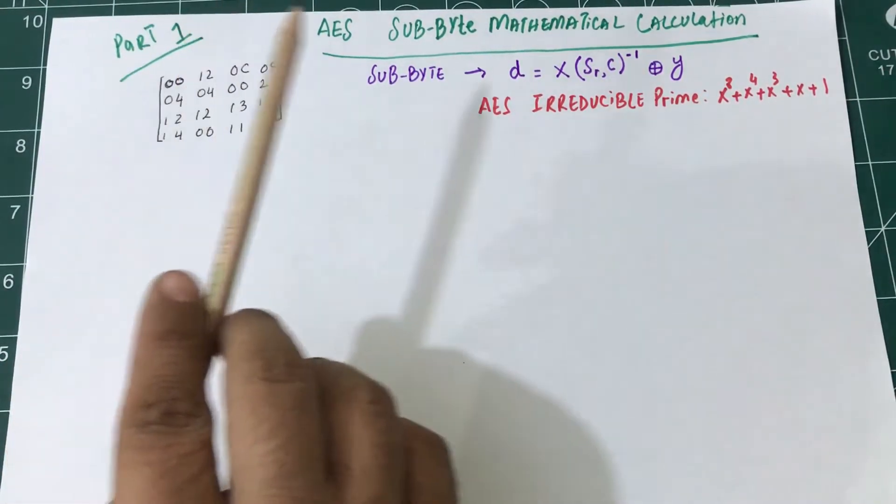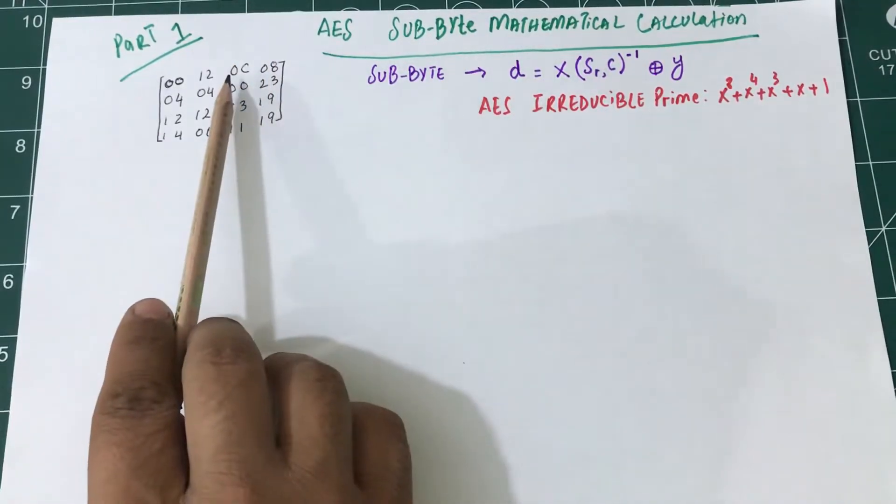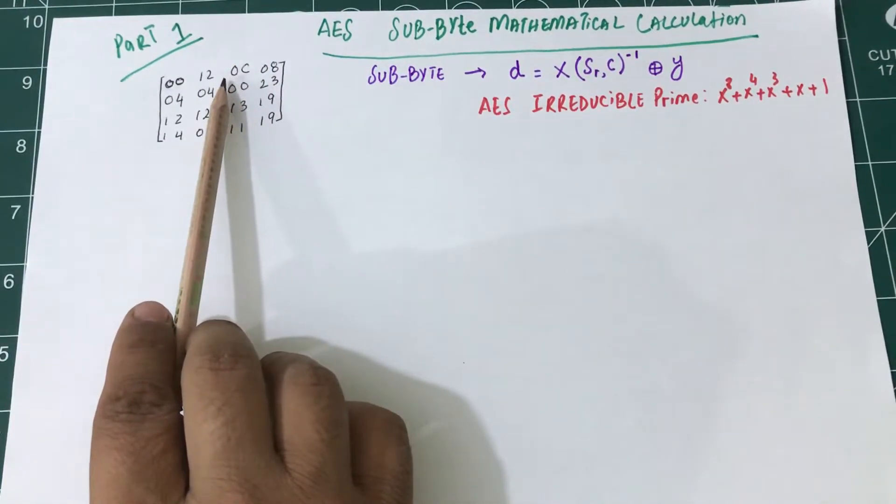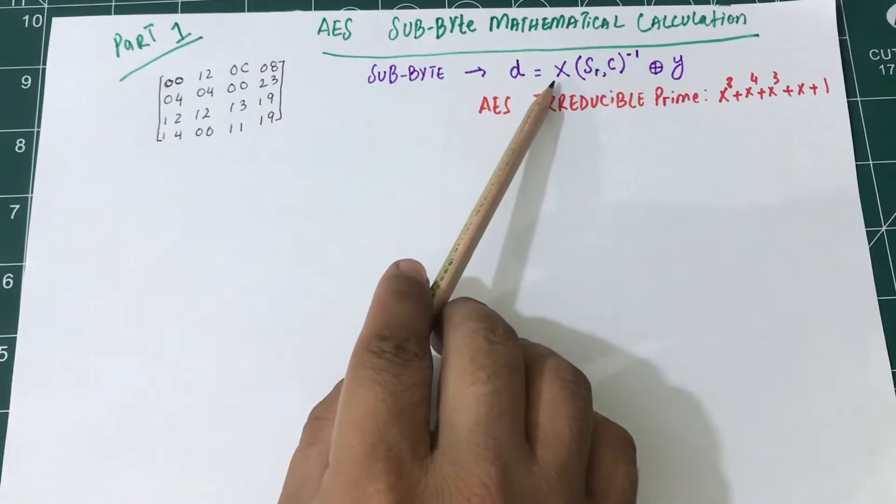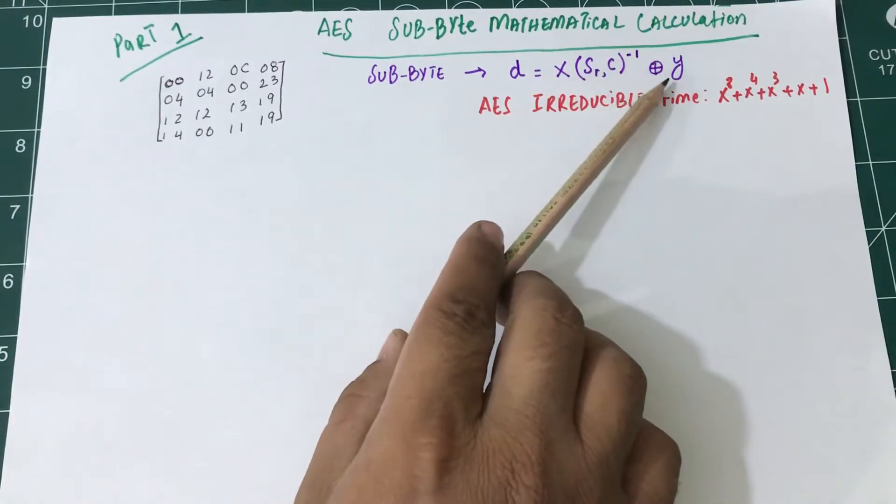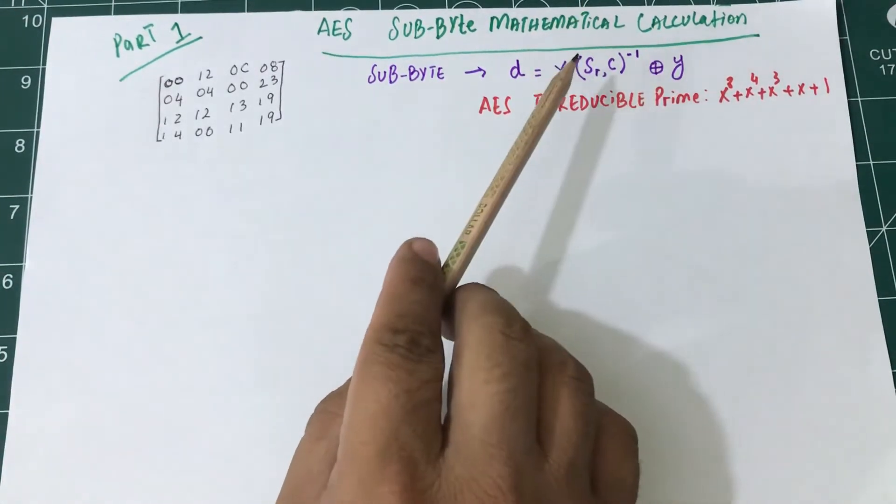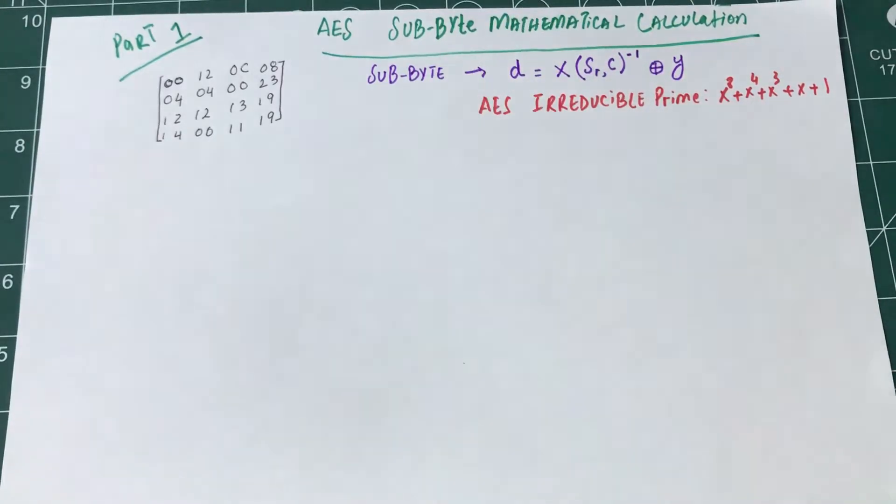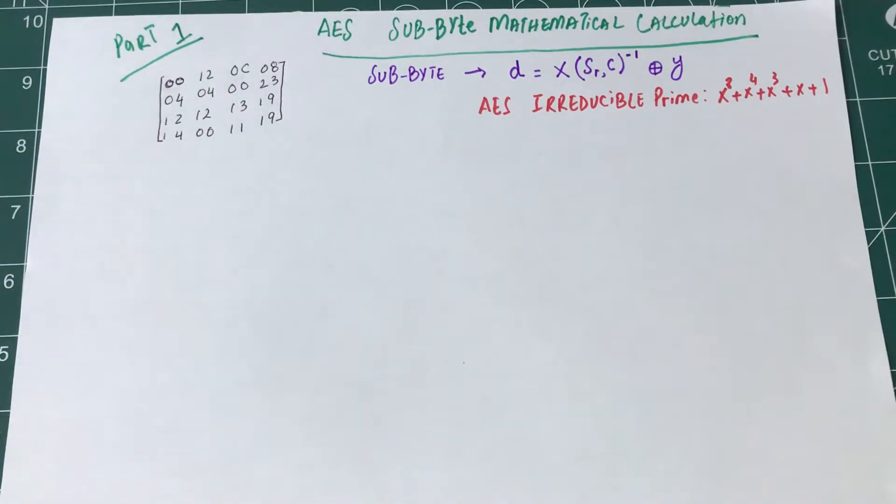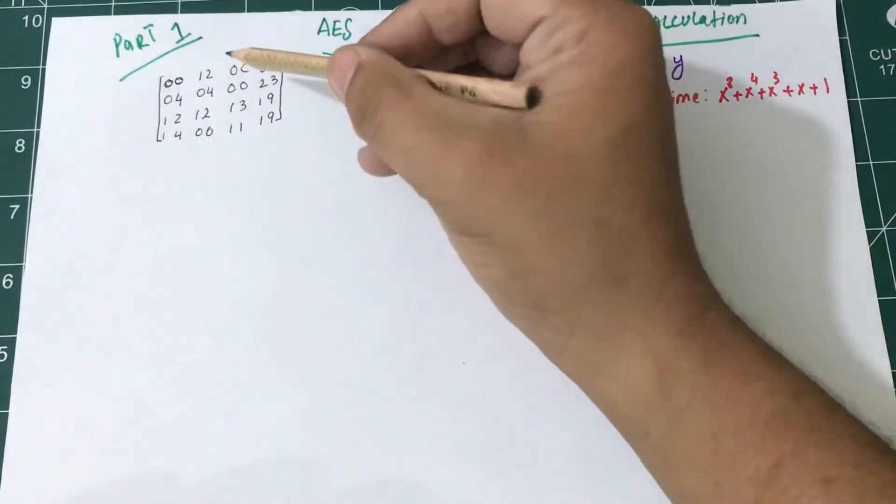The first thing I need to do is take the multiplicative inverse of whatever value you want to transform, then multiply that by some value x, then take an XOR with some value y. These x's and y's are actually part of the standard, and I will show you in a different part.